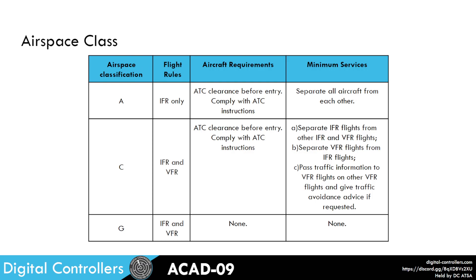Then we have class Charlie airspace where we allow both IFR and VFR flight. You still require ATC clearance before entry and aircraft have to comply with ATC instructions. However, as a controller we need to separate IFR flights from everything else and VFR flights from IFR flights. We do not need to separate VFR flights from other VFR flights, but we would rather give traffic information or potentially provide advice if requested.